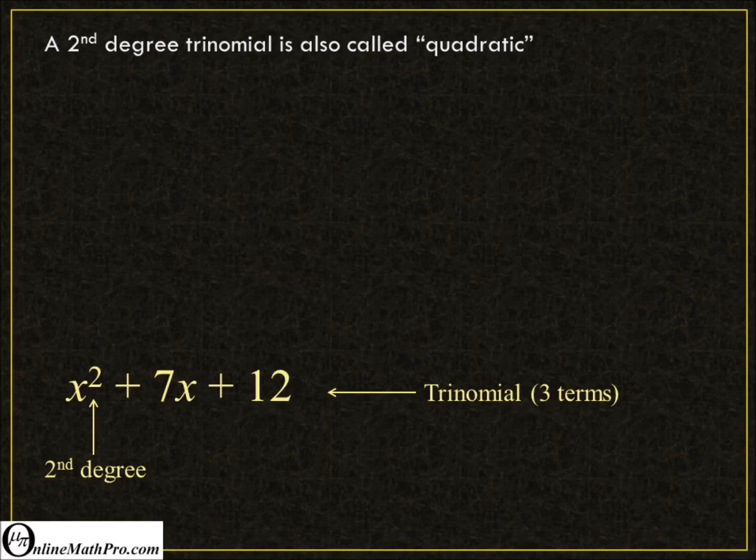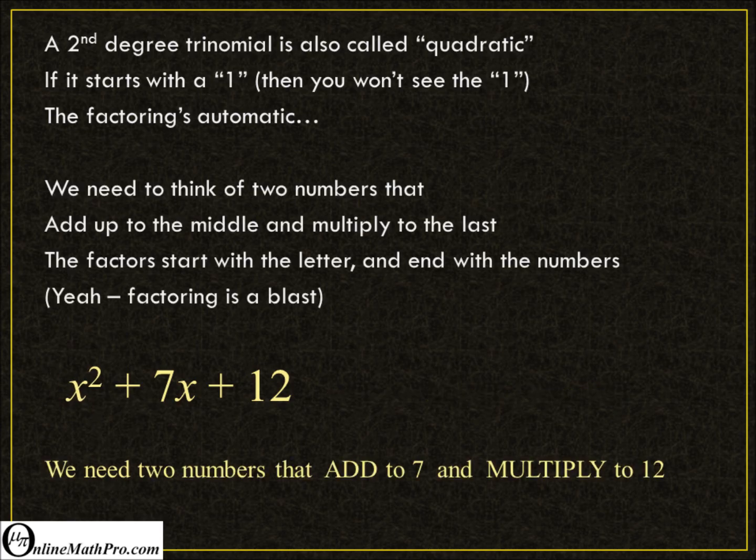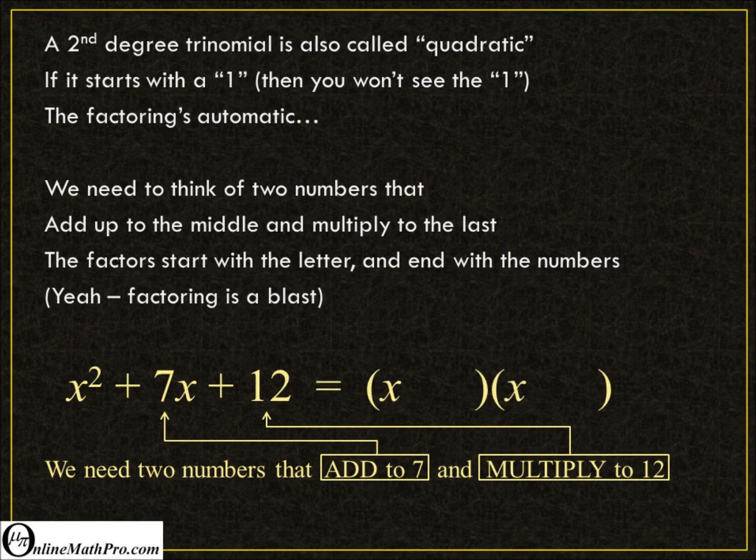A second-degree trinomial is also called quadratic. If it starts with a one, then you won't see the one - the factoring's automatic. We need to think of two numbers that add up to the middle and multiply to the last. Each binomial starts with the letter and ends with the numbers - factoring is a breeze.